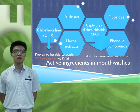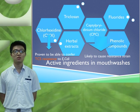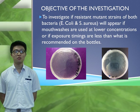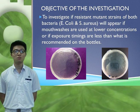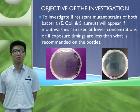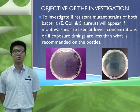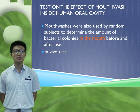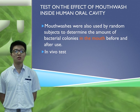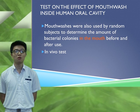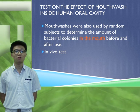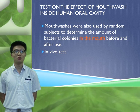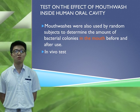However, based on recent studies and hypotheses, antimicrobials are likely to select for resistance and lower microorganism sensitivity. The objective of this study is to investigate if resistant mutant strains of bacteria will appear if mouthwashes are used at lower concentrations, or if exposure timings are less than what is recommended on the bottles. Tests were also carried out to determine the effect of concentration of different mouthwashes on bacteria and effects of different rinsing times. Mouthwashes were also used by random subjects to determine the amount of bacterial colonies in the mouth before and after use.